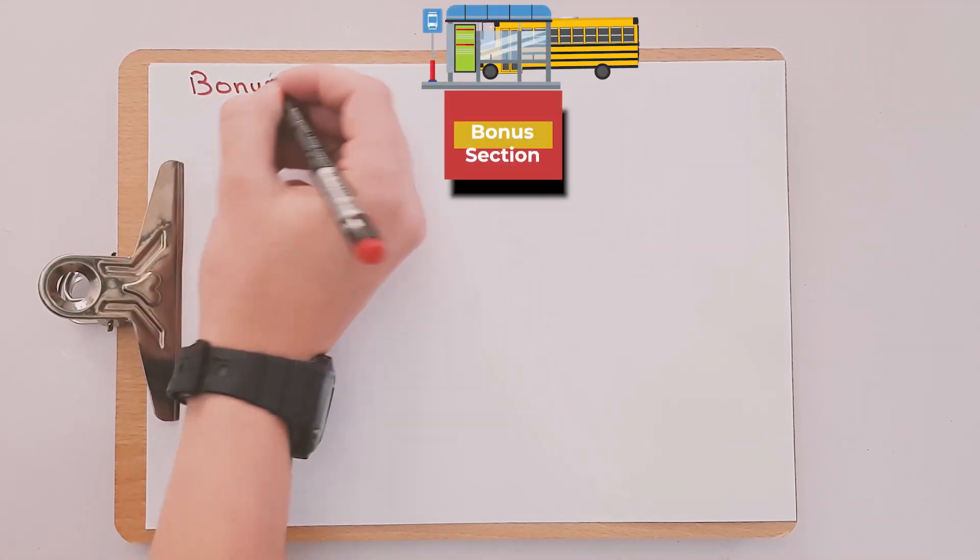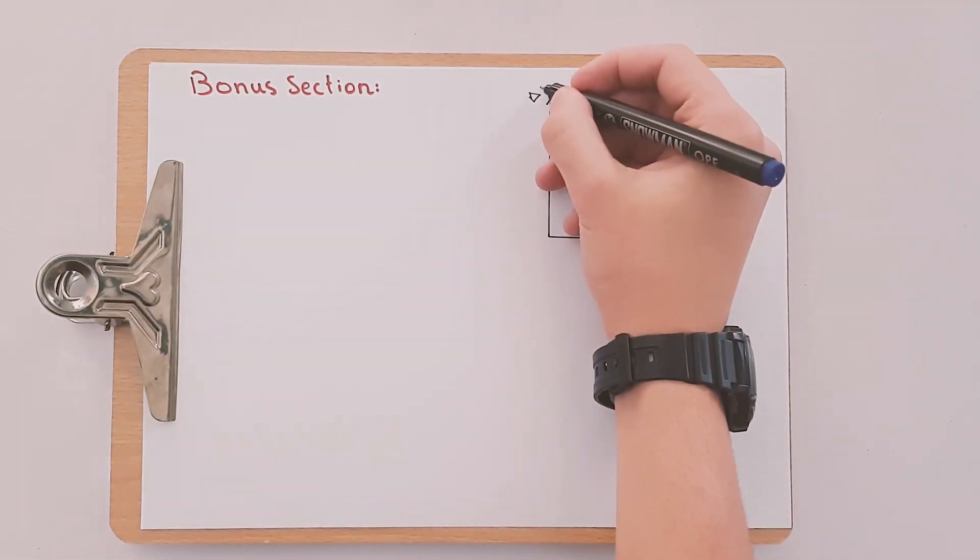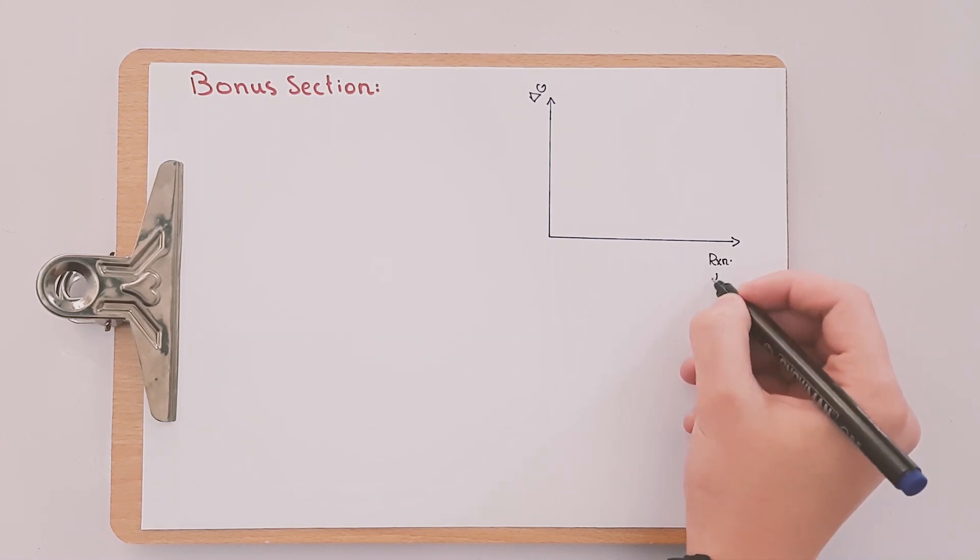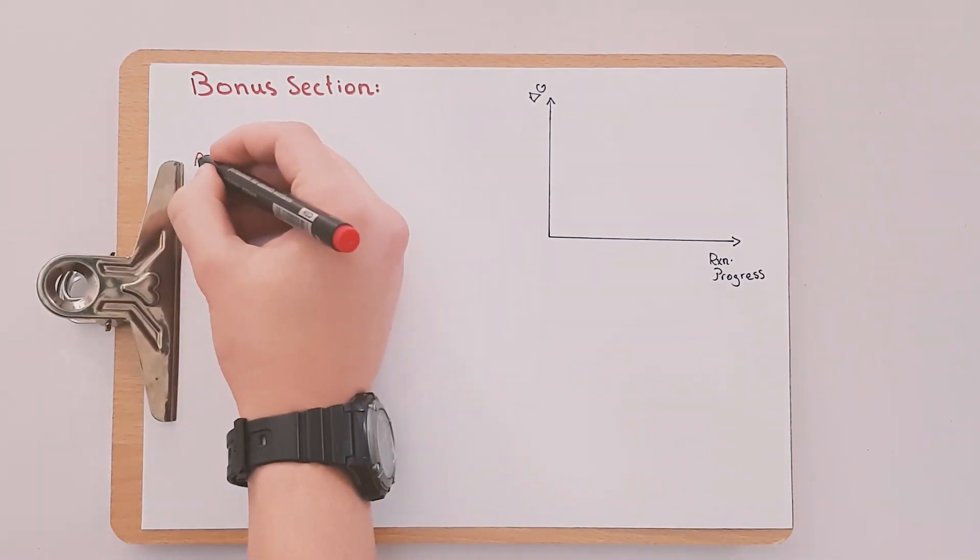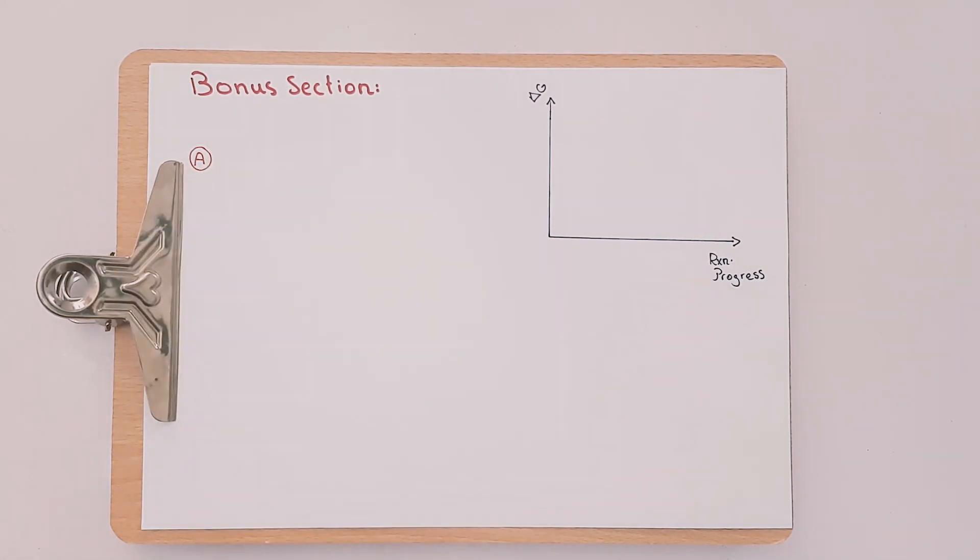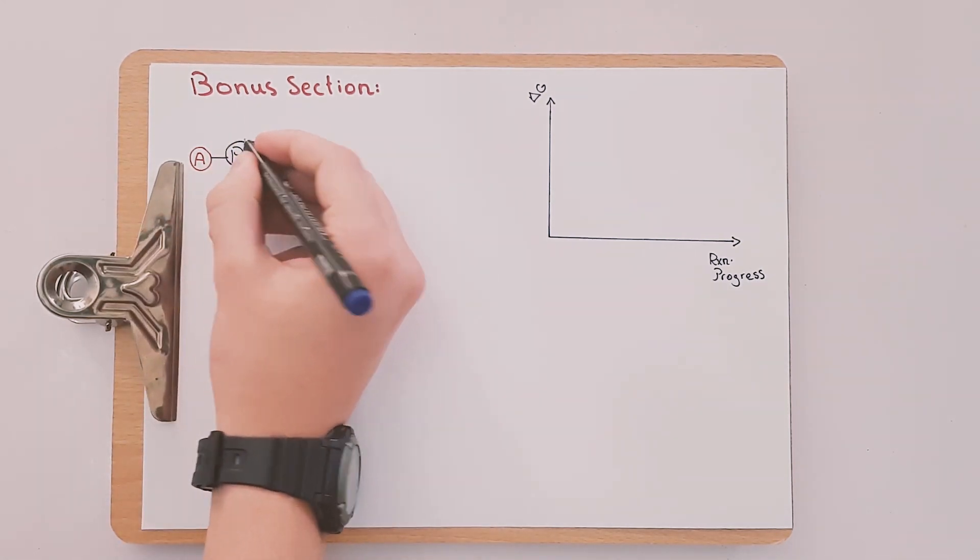And now it's time for bonus section. Before anyone closes the video, you need to know how useful the energy diagram can be. At certain time we all wondered why the ADP molecule gains another phosphate group although it will make it less stable and higher in energy.